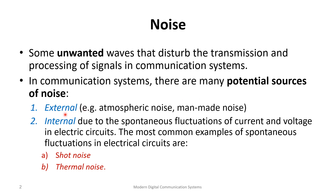We can look at potential sources of noise. First is external — not from the same system — like atmospheric noise or man-made noise. Or it could be internal, due to the spontaneous fluctuations of current and voltage in electric circuits. The most common examples of spontaneous fluctuations in electrical circuits are shot noise and thermal noise.